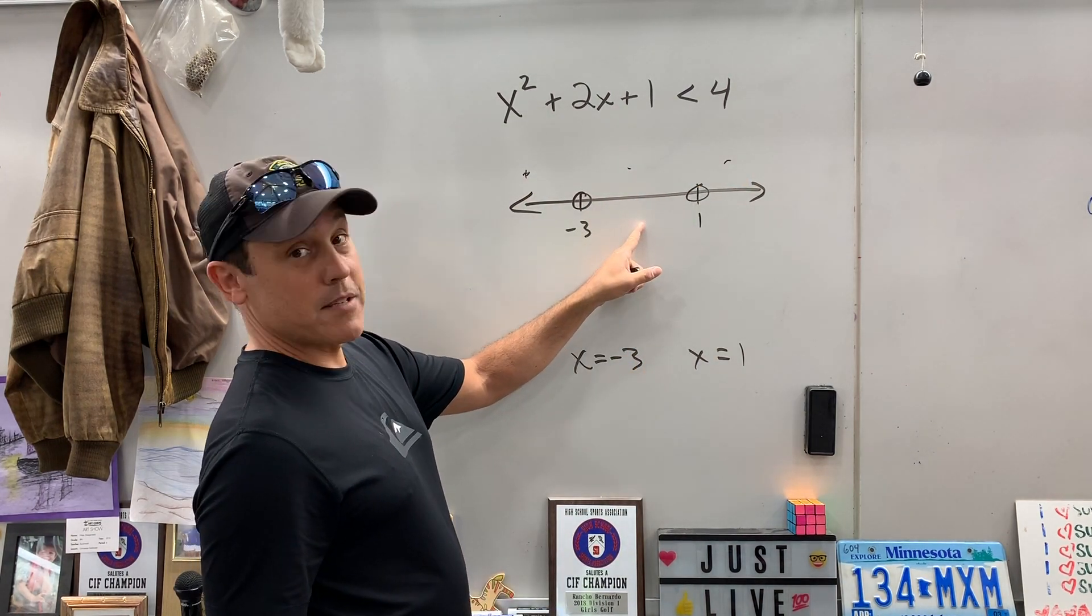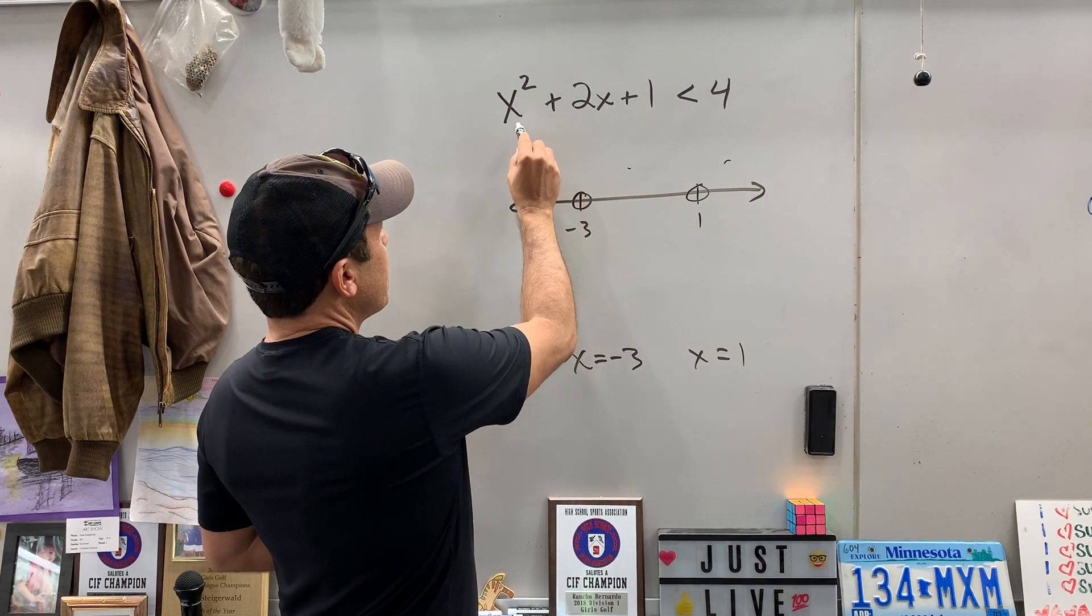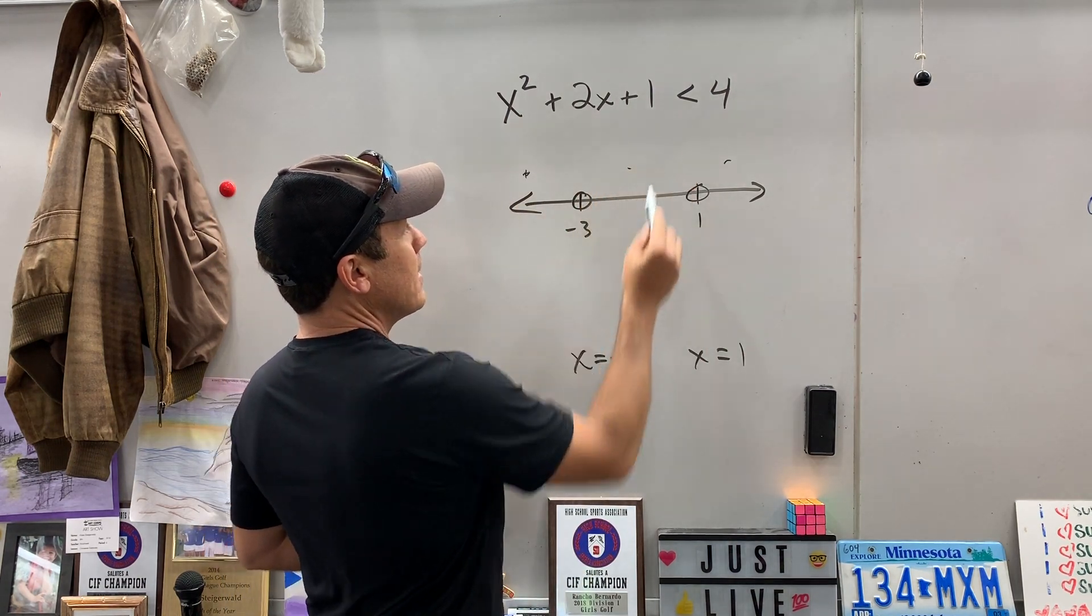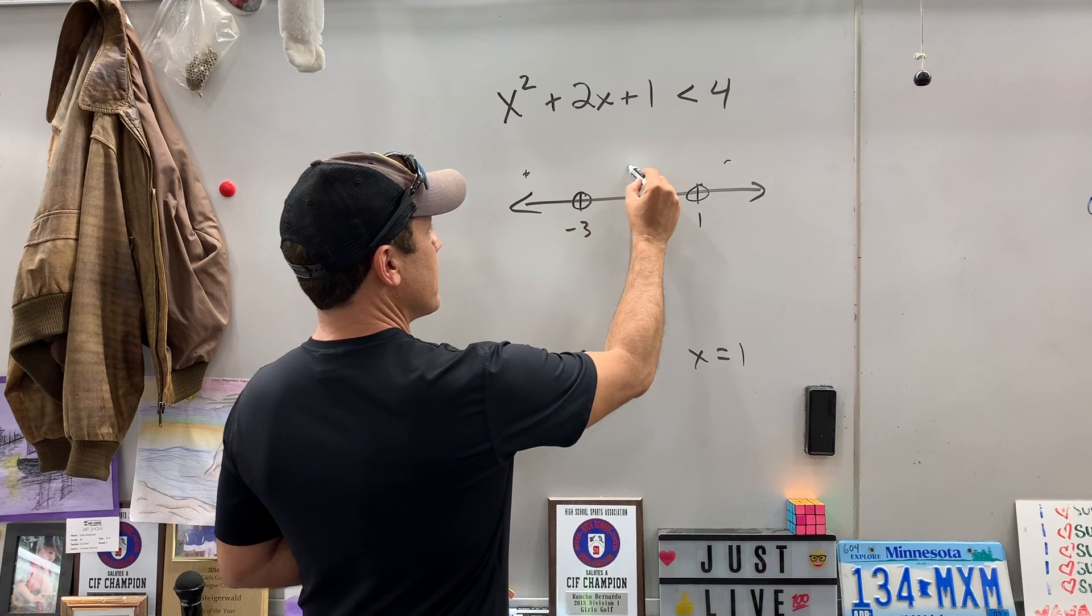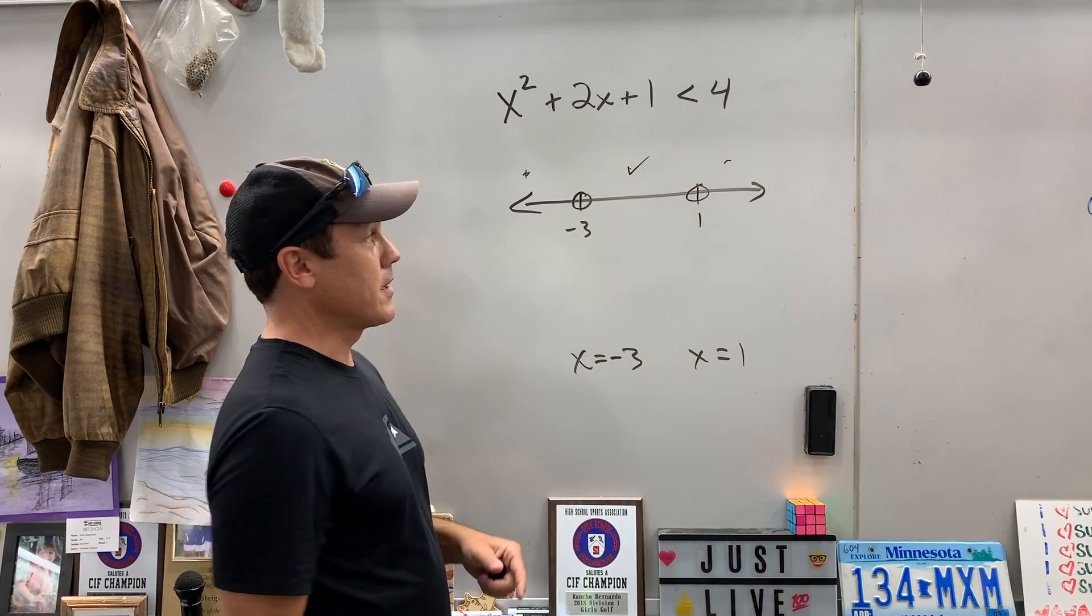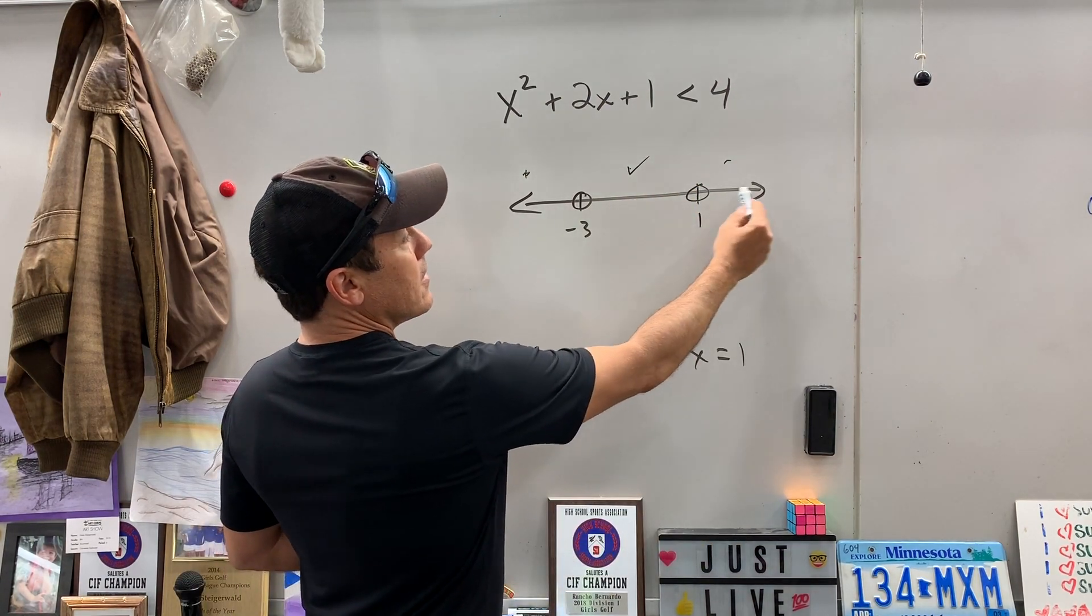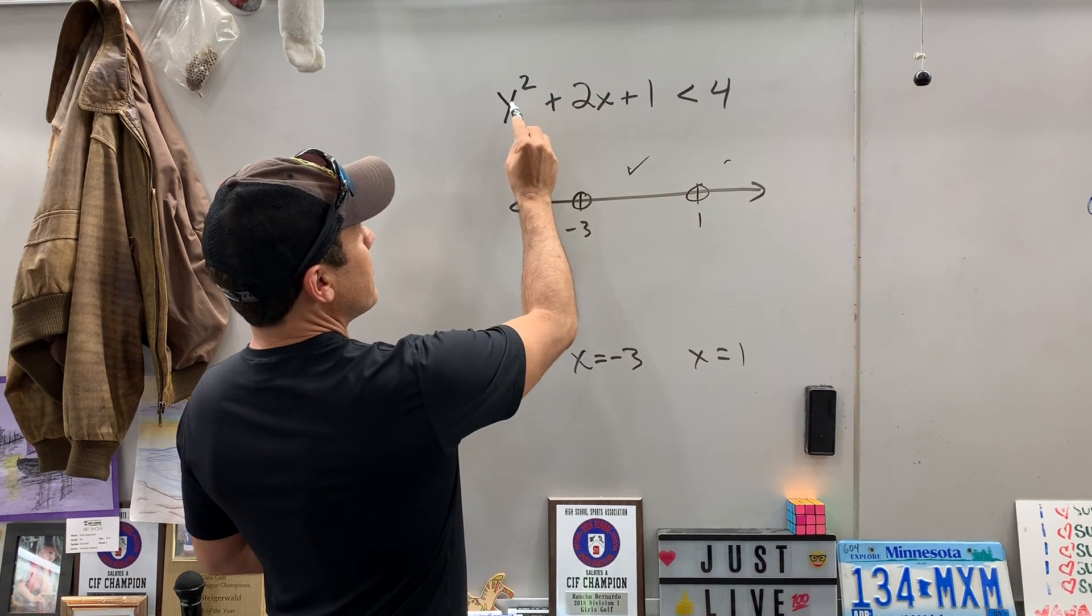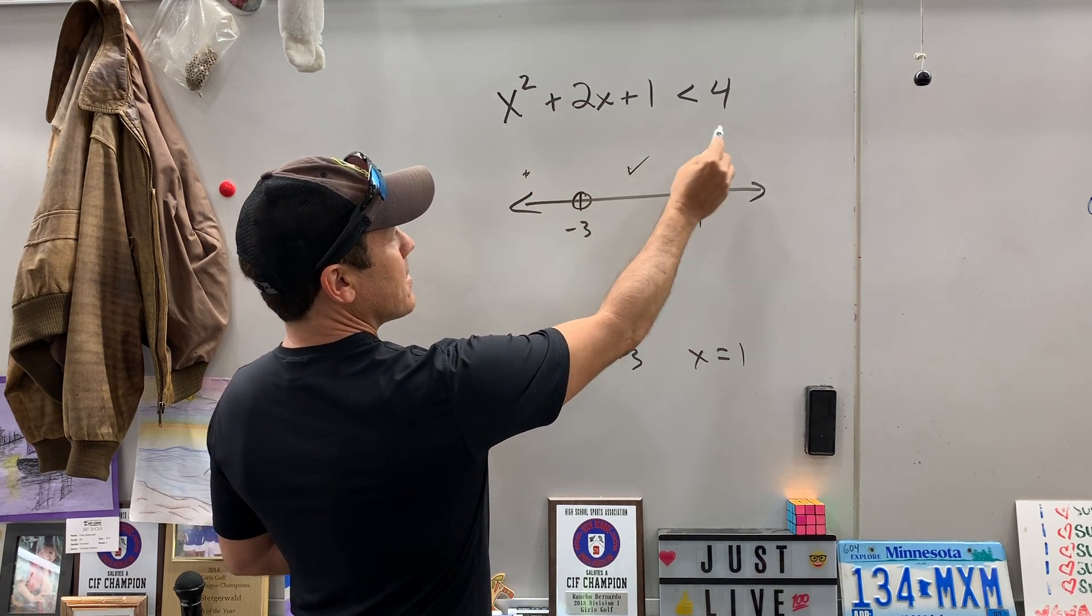Well, let's put zero in because that's pretty easy to work with. Put zero here, you get one. Is one less than four? Yeah, that's true. So I put a little check mark. Let's pick a number like two. That's over here. That'd be four, eight, nine is less than four, no.